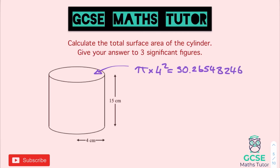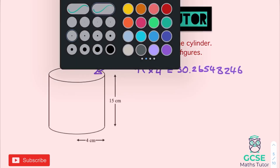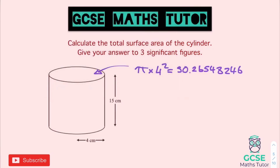Multiplying by 2 to get the area of both circles gives us 100.5309649. That is the total area of our two circles.